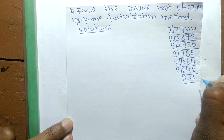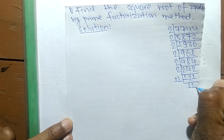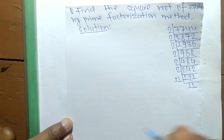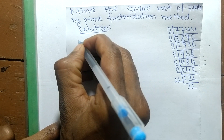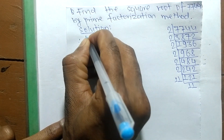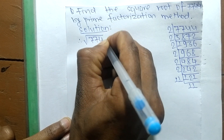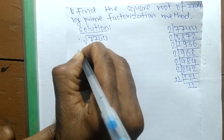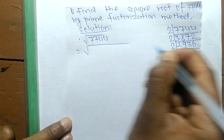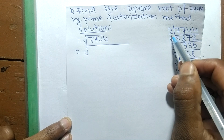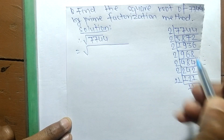We arrive at 11 times 11 which is equal to 121. So the square root of 7744 — from these prime factors we can write 1, 2, 3, 4, 5, 6 — that is six 2s along with 11 times 11.